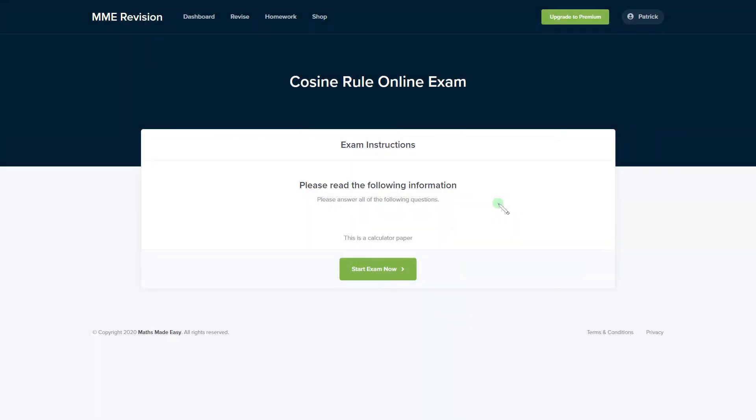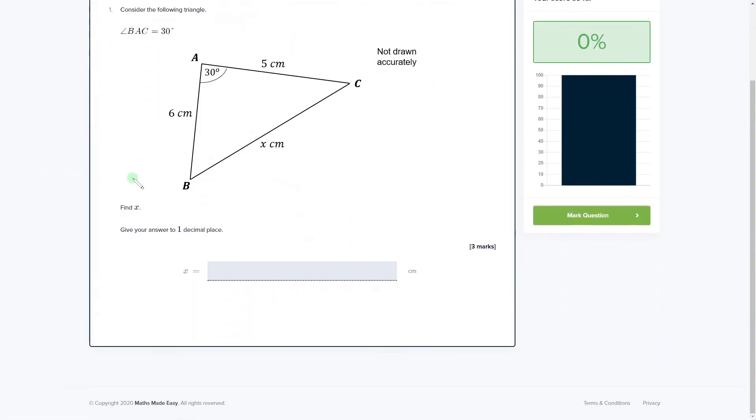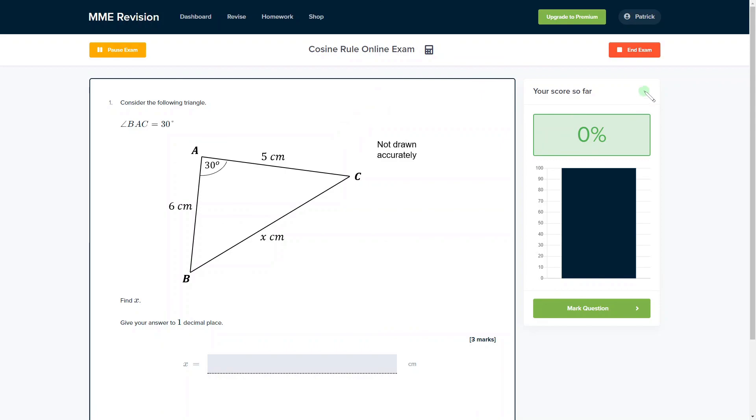Now if you want to practice some cosine rule exam style questions you can do so with our online exam. It's available through our revision platform and if you take the test you'll find loads of different questions to have a go at. You get instant feedback on all of them so you can track your progress, see the solutions and find out where you went wrong. So if you're interested then click the link below, it will take you straight there.